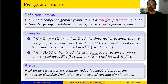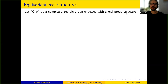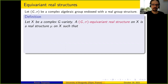Now I want to talk about equivariant real structures. Let (G, σ) be a complex algebraic group endowed with a real group structure — equivalently, a real algebraic group. Given X a complex G-variety, a (G,σ)-equivariant real structure on X is a real structure μ on X — an anti-regular scheme involution — satisfying the σ-linearity condition: for every g ∈ G and x ∈ X, μ(g·x) = σ(g)·μ(x).